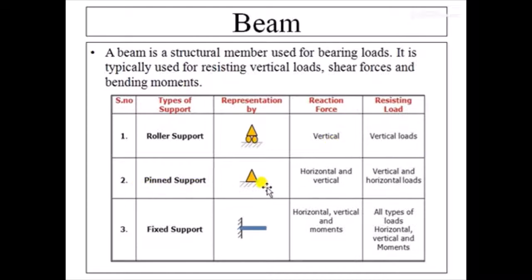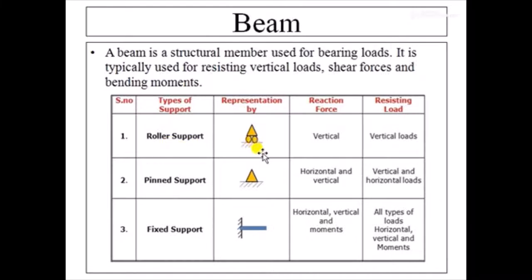The second one is the pin support. It is represented by this symbol and the reaction force acts in both the horizontal and vertical direction. The direction of reaction force is the direction of resisting loads — a roller support resists in the vertical direction only, so there will be no vertical movement. A good example of roller support is the roller skate, where your body weight is the vertical load being balanced, whereas the horizontal load is not balanced, and hence the skate moves ahead with the help of the wheel.